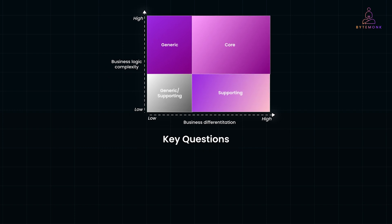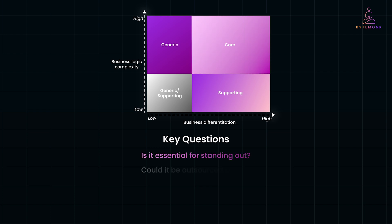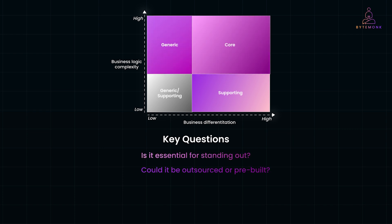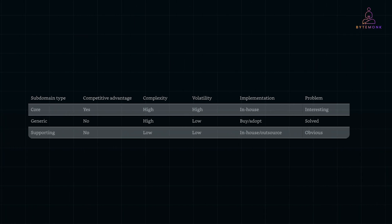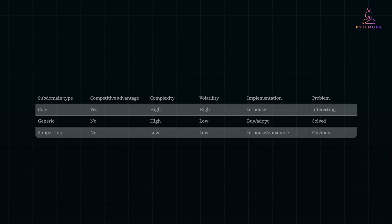Here are some key questions to help you identify subdomains. Is it essential for standing out? Then that's a core subdomain. Could it be outsourced or pre-built? Then that's generic. And if it is simple but necessary, then it can be considered supporting. This table summarizes the aspects in which the three types of subdomains differ.